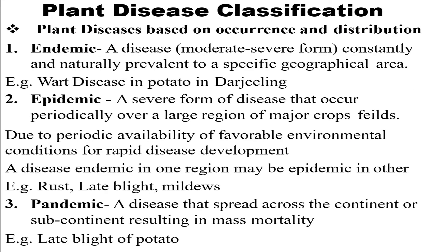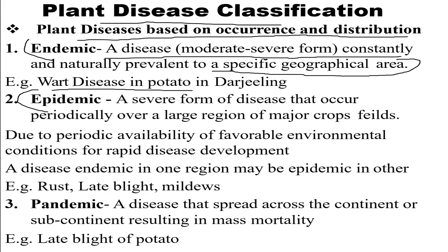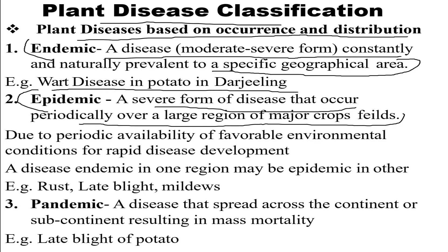Moving on, let's talk about the categorization of plant diseases based on their occurrence and distribution. These include three main types: endemic, epidemic, and pandemic. Endemic is a disease that occurs prevalent to a specific geographical region — for example, wart disease in potato. Epidemic is a severe form of disease that occurs periodically over a large region of major crop fields.